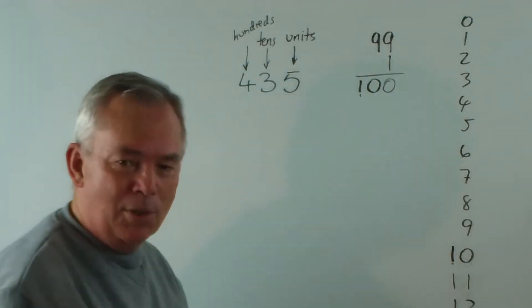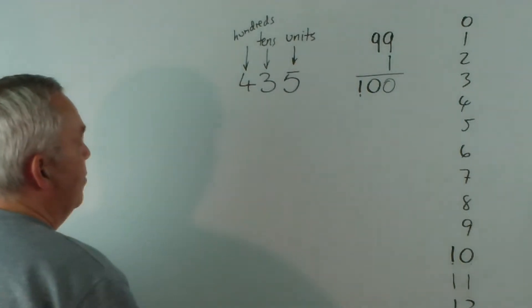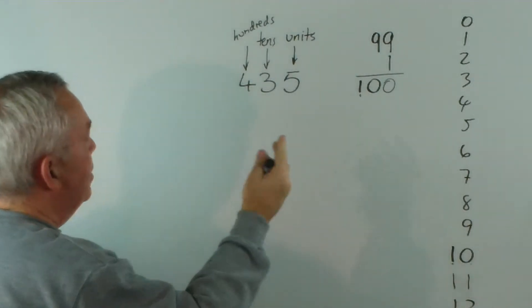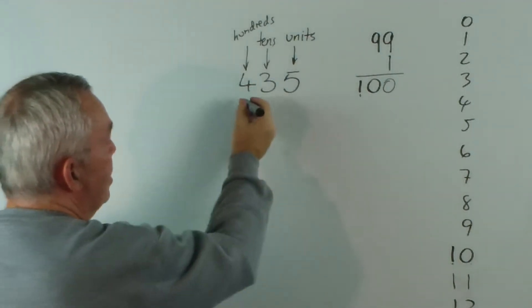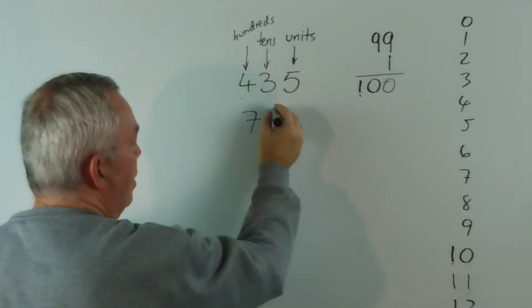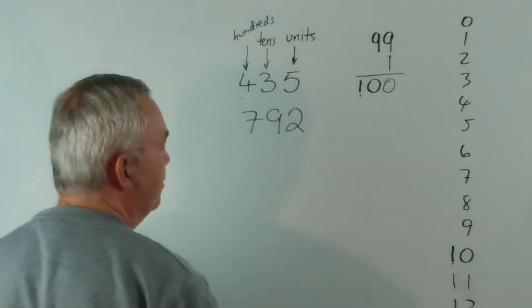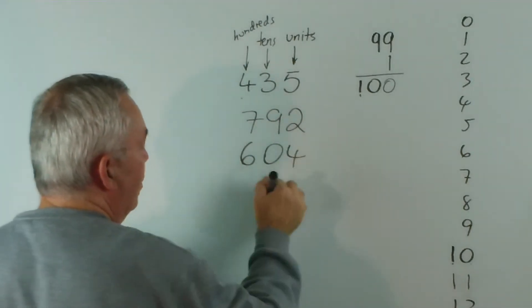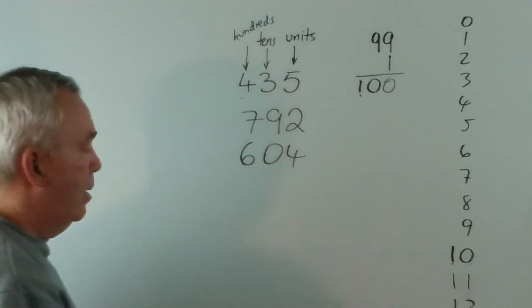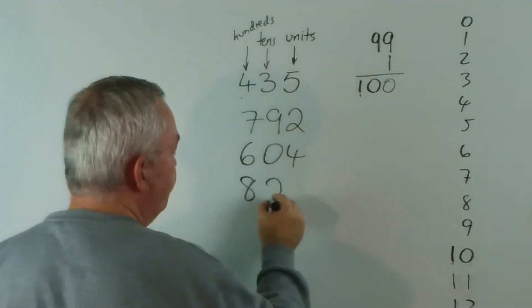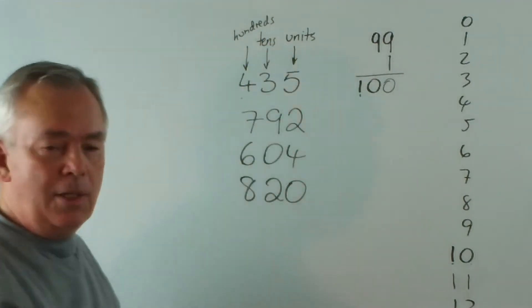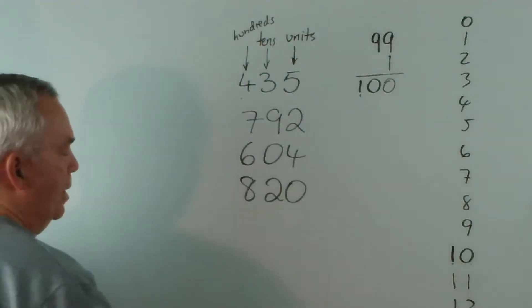So we've got 20, 30, 40, 50, 60, 70, 80, 90. So this is 435. This is 792. We have no tens, so we'd simply say 604. This would be 820. And we wouldn't bother saying any units because there aren't any. So that's 820.